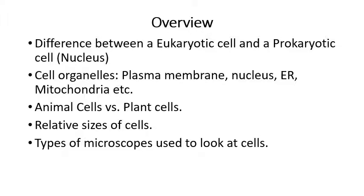Eukaryotic cells evolved — according to the current state of scientific knowledge — after prokaryotes, with prokaryotes preceding eukaryotes by about a billion years. So for about a billion years on Earth, we had nothing but various types of bacteria living in the ocean. Then about a billion years later, we started to see the first eukaryotic cells appear, again in the ocean. Eventually plants and other multicellular organisms evolved from combinations of eukaryotic cells.